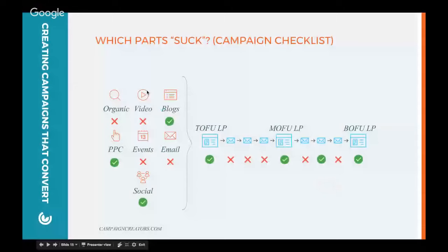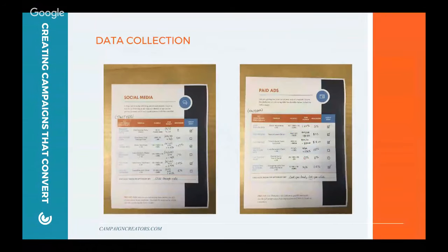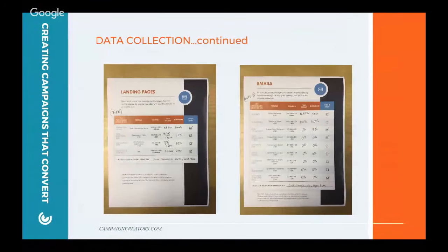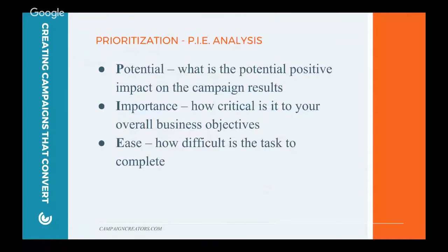There are a lot of different ways to fill it out — we prefer to print it out, put pen to paper, and see how we did. That asset is going to be available at the end of the webinar, so stay tuned for that. Once we came up with results, we went through a prioritization process using a PI analysis, and Sean's going to run through that real quick.